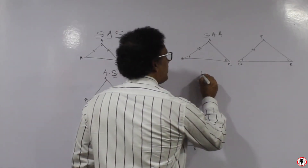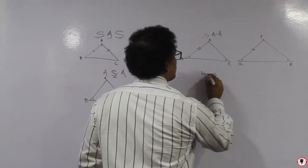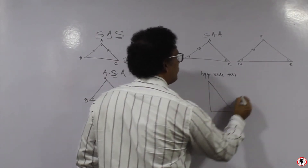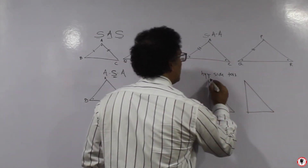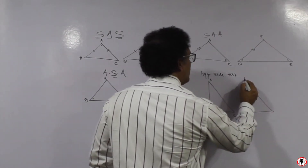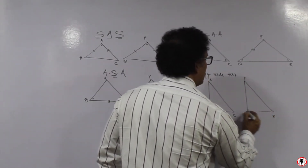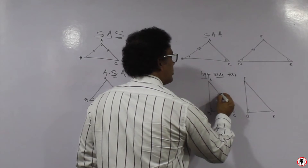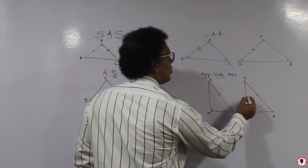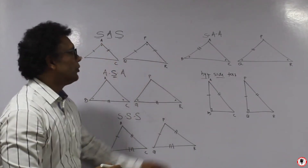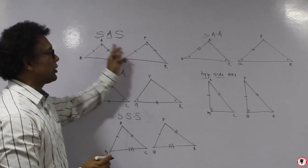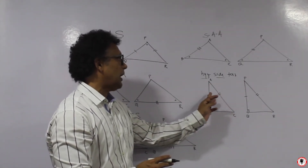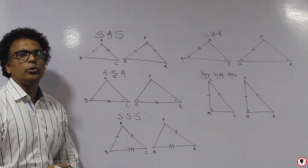The fifth test is the Hypotenuse-Side test, and it is only applicable for a right-angle triangle. Because only in a right-angle triangle will you get a hypotenuse. The hypotenuse should be congruent and one of the other sides should be congruent. Because the right angle is between the sides, you cannot call it an SAS test — so it is called the Hypotenuse-Side test.